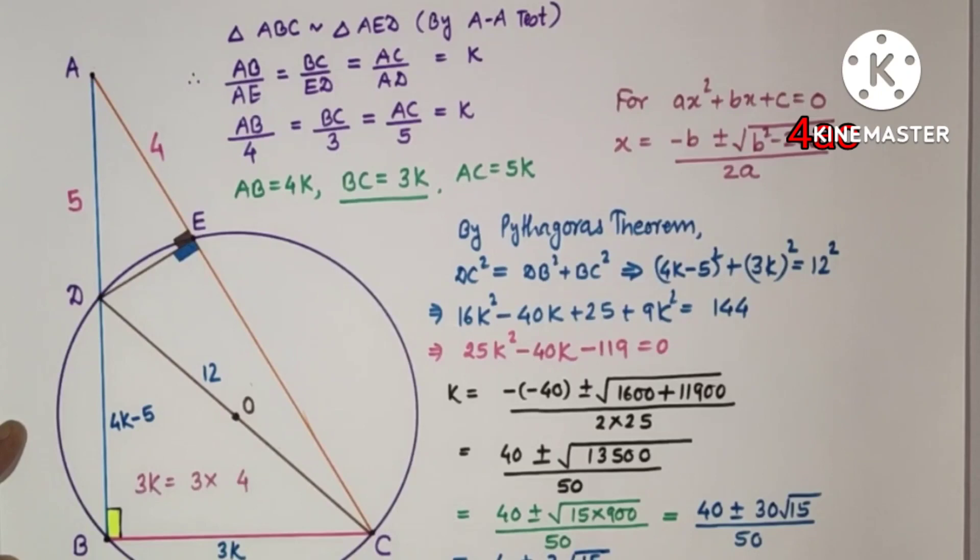4 minus 3 root 15: 4 square is 16, 3 root 15 square is 9 into 15, so this will be more than this. So 4 minus 3 root 15 will be negative, therefore ignore this value.